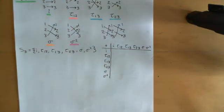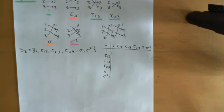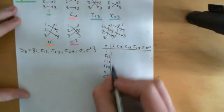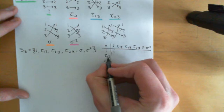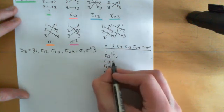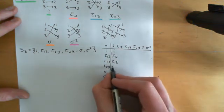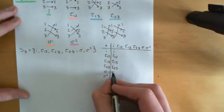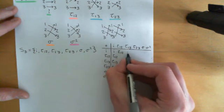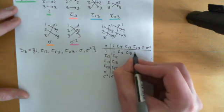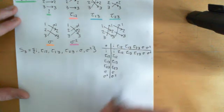We've got 36 entries to fill in, and I'm not going to do all of them, but there are some easy ones. We know that composing the identity map with any other map just leaves that map the same — so we can fill in the identity column and identity row immediately: I composed with anything, or anything composed with I, just returns that element.